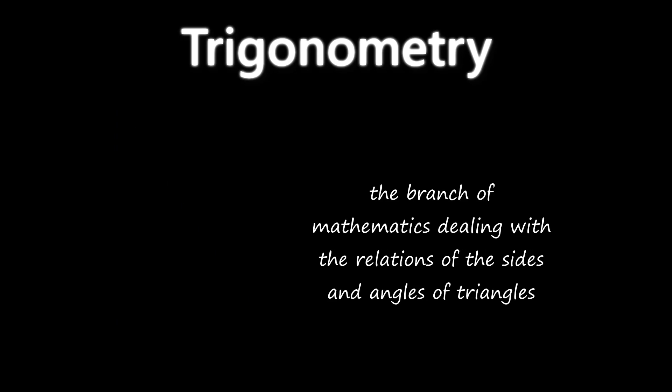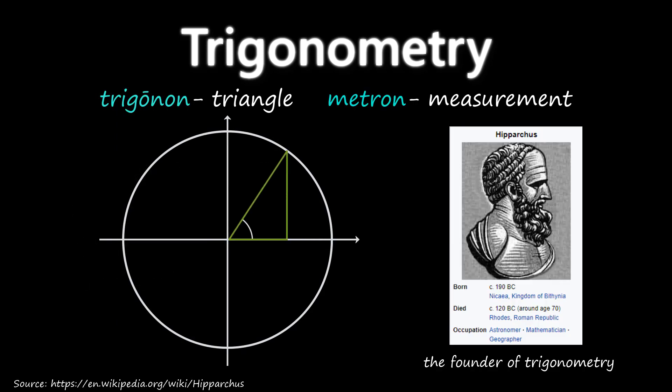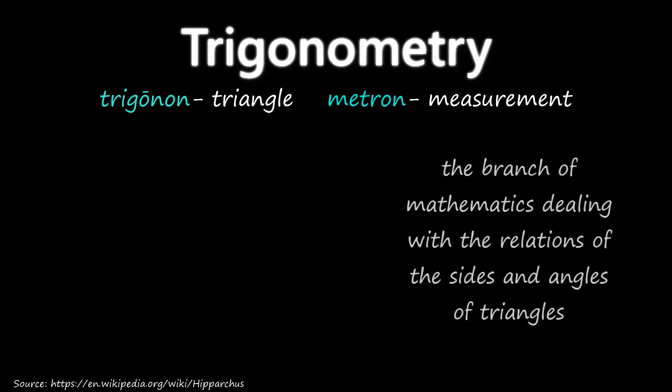Trigonometry is actually a Greek word where trigon means triangle and metron means measurement. So basically, trigonometry means measurement of triangles. And we are going to deal only with right-angle triangles.